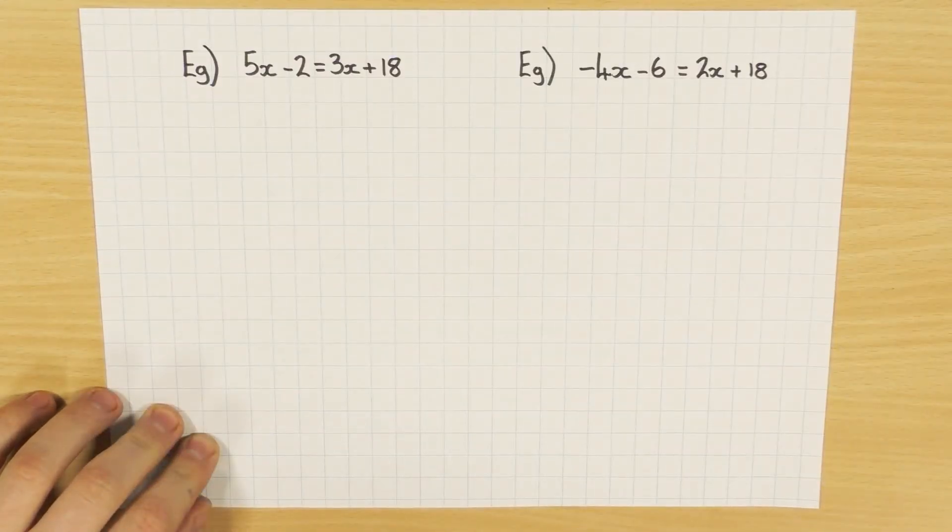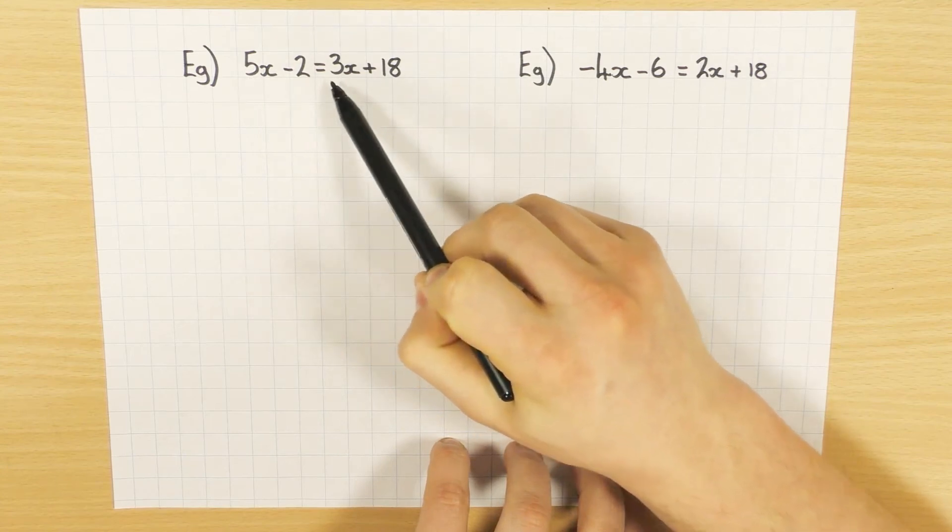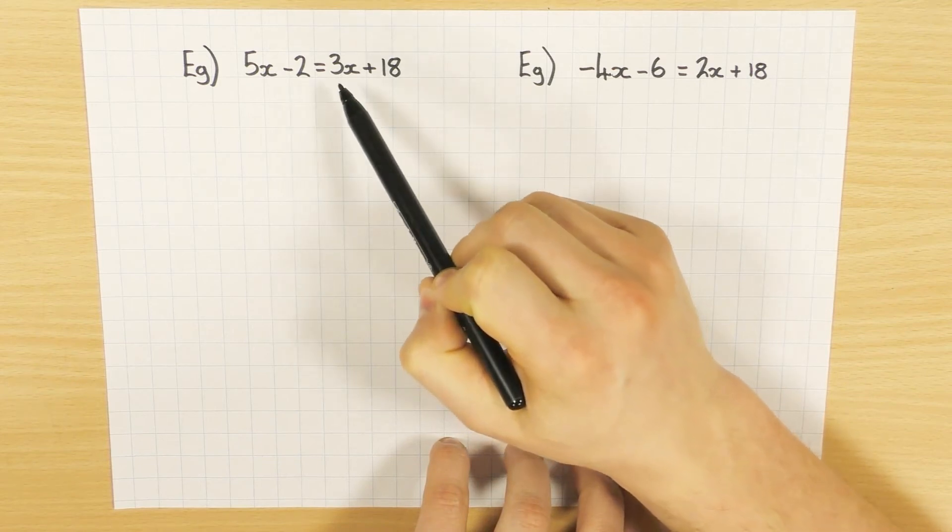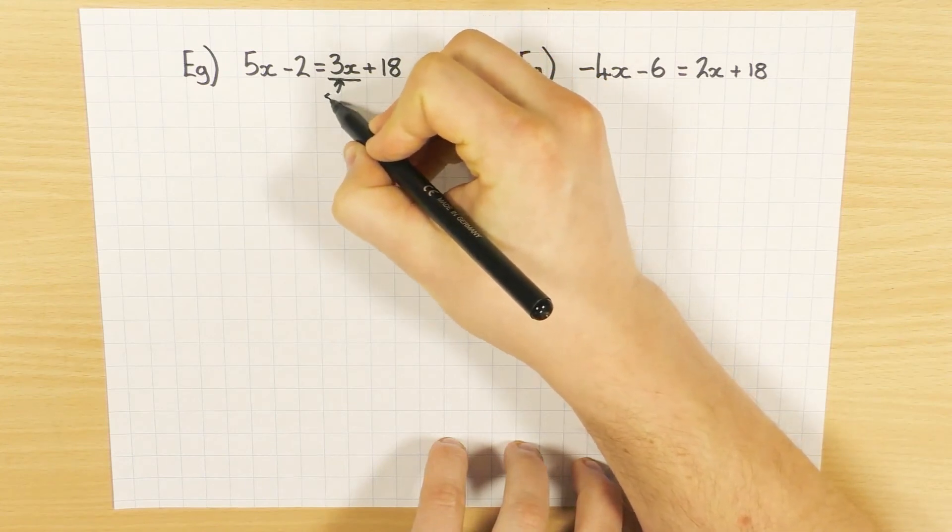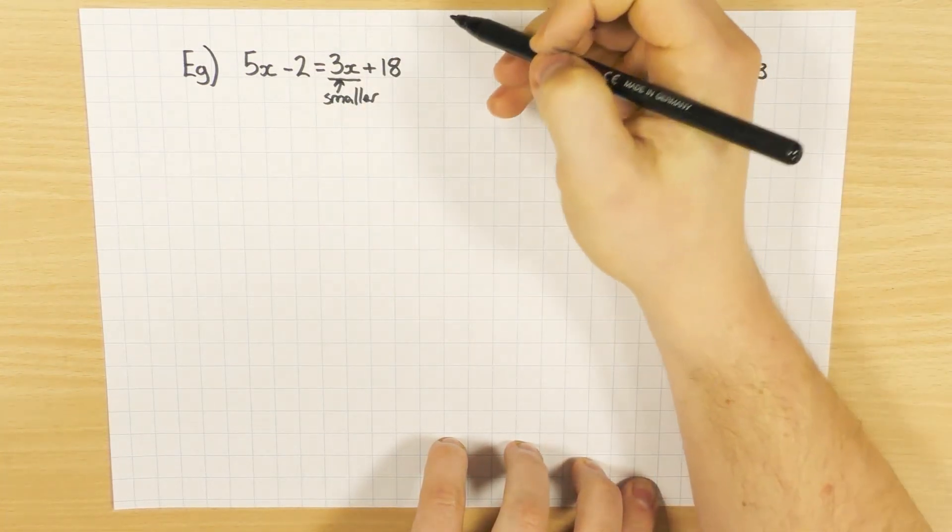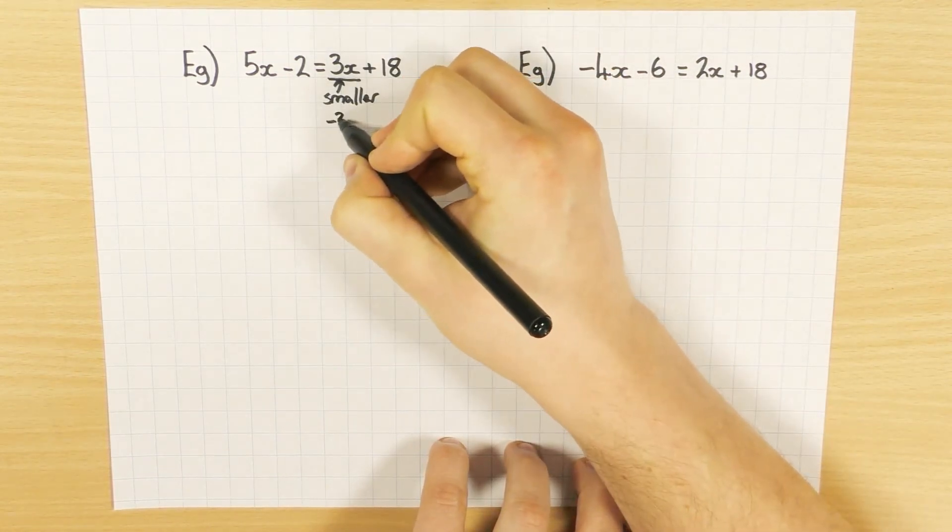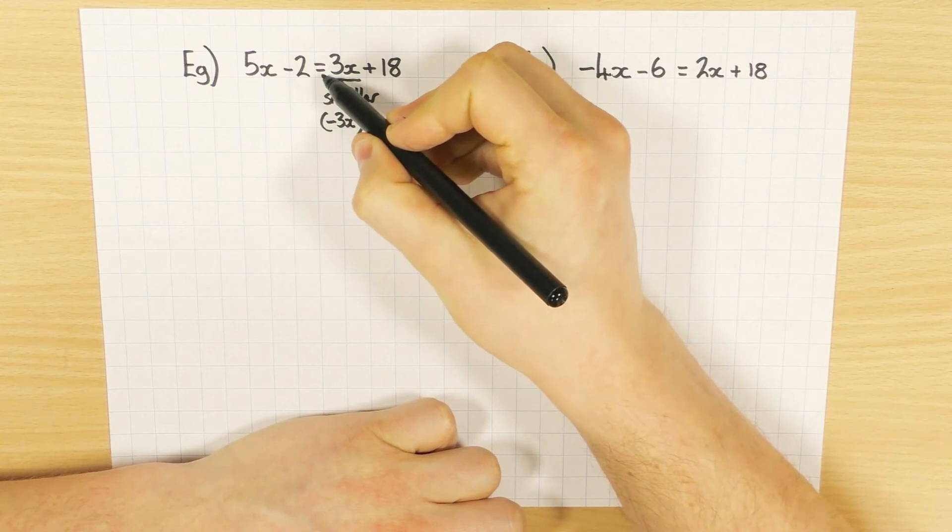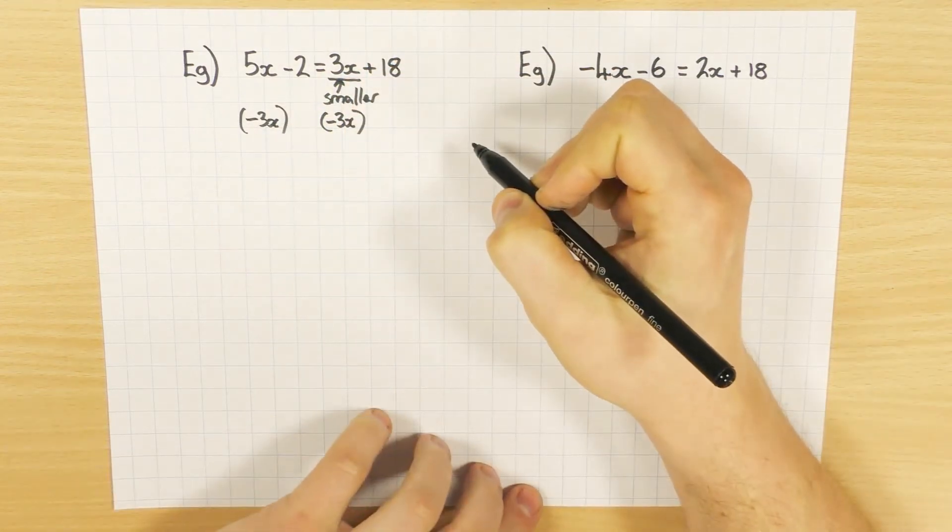However, harder questions are like this, where we can't use the flowchart straight away, because I have a 5x here and a 3x here. So I've got x's on both sides of the equals. Now to deal with this, I have to get rid of one of them. And the way to do that is to look at which one is the smallest one and get rid of that one. So 3x is smaller than 5x, so that's the one I'm going to get rid of. So to get rid of 3x from this side, it's quite simple. I do the opposite, and I take away 3x from this side. But to keep it equal, whatever I do to this side, I have to do to this side. So I'm going to take away 3x from that side as well.